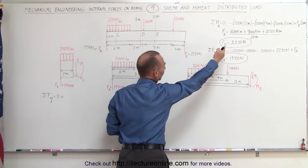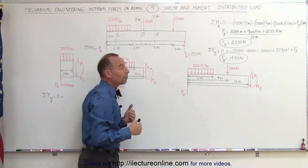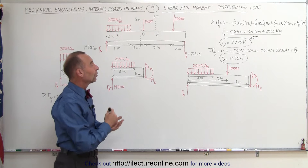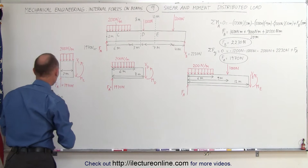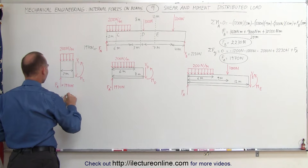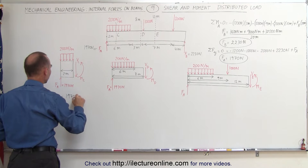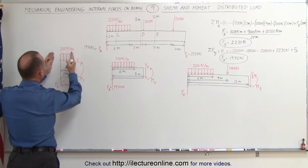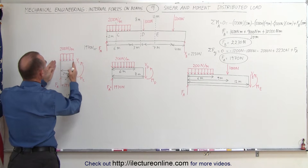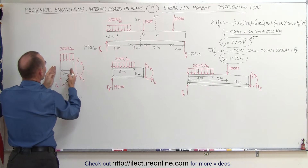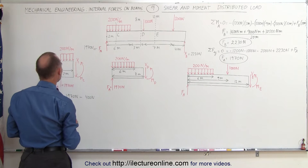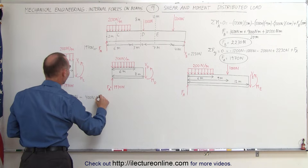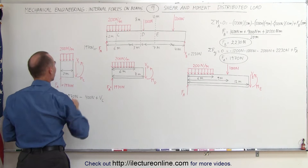You can solve for the force at B, and then by summing all the forces in the y direction, solve for the force at A. Now, to find the shear at location C, we say the sum of all forces in the y direction equals zero. We have the reaction force at A equal to positive 1970 N, minus the distributed load over a distance of two meters: 200 N/m times 2 meters equals 400 N. And then plus V sub C, the shear force at C.